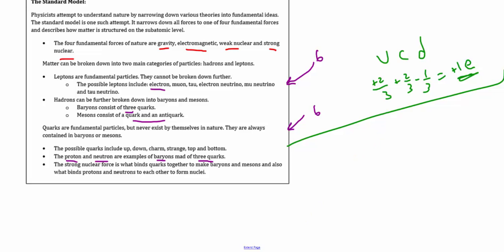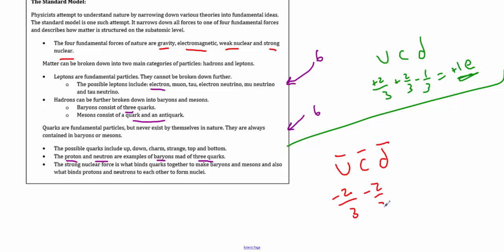To indicate anti-quarks, put a bar over the symbol. The anti version of up/charm/down becomes anti-up (−2/3 e), anti-charm (−2/3 e), and anti-down (+1/3 e), giving an overall −1 e — opposite in charge, as expected for anti-matter. Everything else remains the same except for opposite magnetic spin.